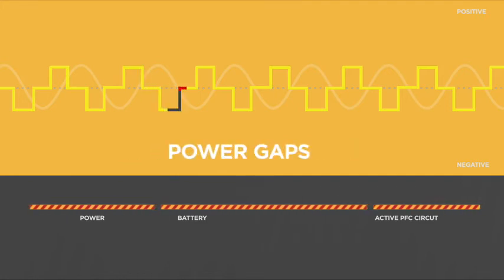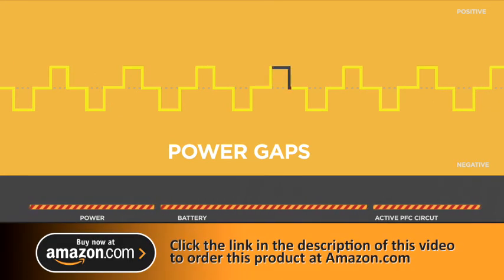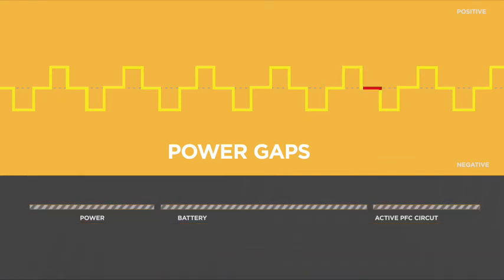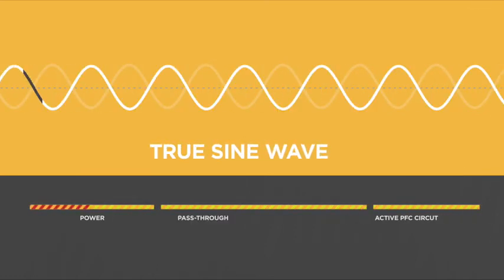These power gaps may create stress on the equipment, reducing its useful life. An active PFC circuit may detect the gaps as a loss of power and shut down the equipment without warning. This can result in equipment damage, data loss, or both.